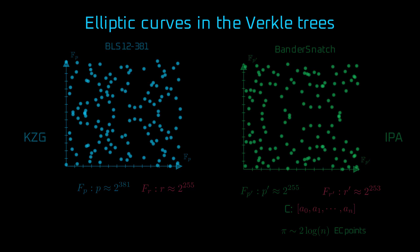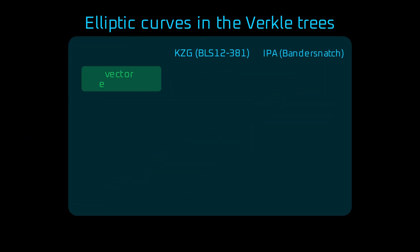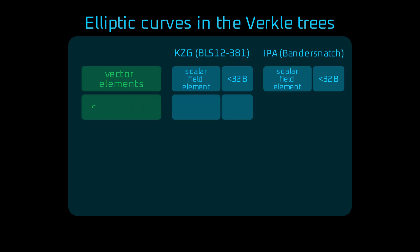Let's look at these sizes one more time. We are committing to the vector of scalar field elements. In both KZG and IPA, the opening, which is a single scalar field element, is under 32 bytes. Commitments and proofs, however, are elliptic curve points.